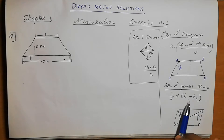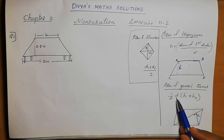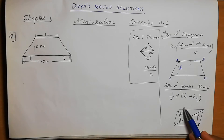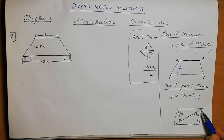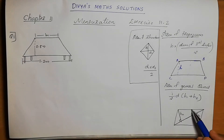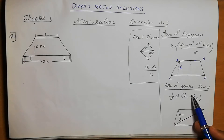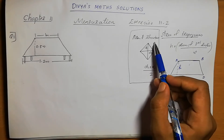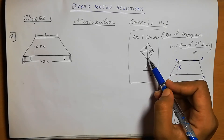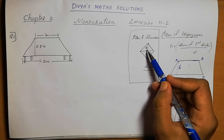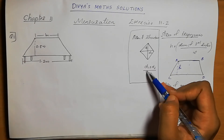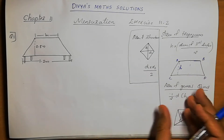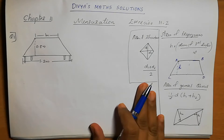Next, area of a general quadrilateral — any four-sided figure. The formula is: half into diagonal into (height 1 plus height 2). We take the diagonal, and from the two opposite vertices we drop two heights, add those heights, multiply with the diagonal, then divide by 2 to get the area. Next, area of a rhombus: diagonal 1 into diagonal 2 divided by 2. Multiply the two diagonals and take half to get the area of the rhombus. We apply these equations when solving problems.